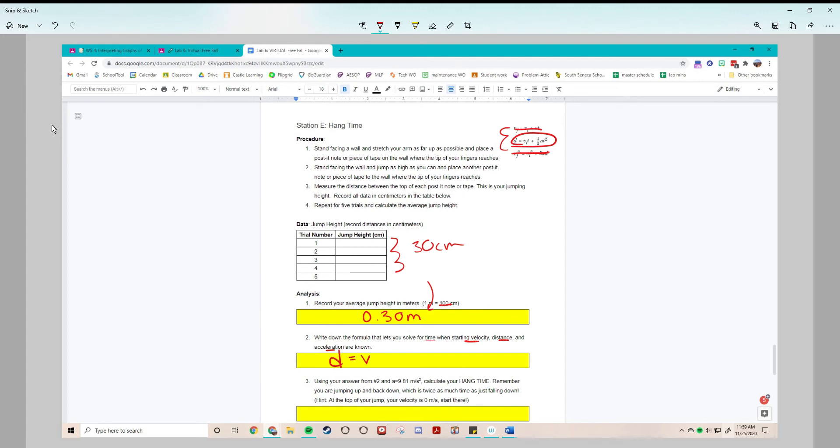Distance equals velocity initial times time plus one half a t squared. I often like to put a little curly q on my t so I don't get them confused with plus signs. You can also put multiplication symbols in between your letters so you don't get them confused with subscripts.